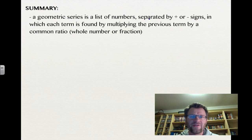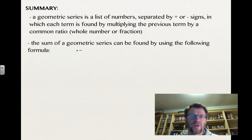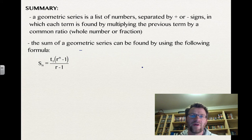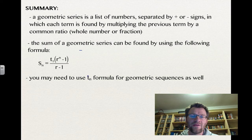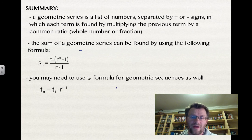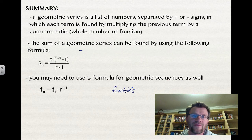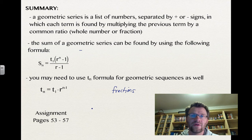In summary, a geometric series is a list of numbers separated by positive or negative signs, in which each term is found by multiplying the previous term by a common ratio — which could be a whole number or a fraction. The sum formula is Sn = T₁(rⁿ − 1)/(r − 1), and you may also need the term formula Tₙ = T₁·r^(n−1). Watch out for fractions — just remember your fraction rules and simplify your final answer as much as possible. The assignment is on pages 53 to 57. Good luck!